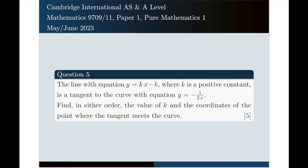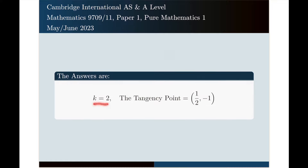If you do this problem correctly, this will bring you 5 points. It would be a good idea to pause the video at this point and try to solve the problem yourself first. If you do your calculations correctly, these are the answers that you will get: k is equal to 2, and the tangency point has coordinates (1/2, -1).